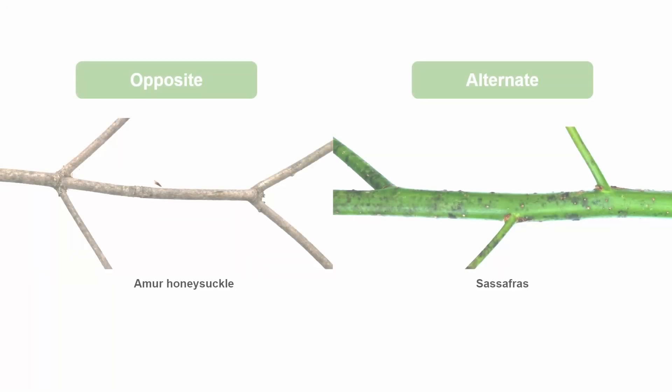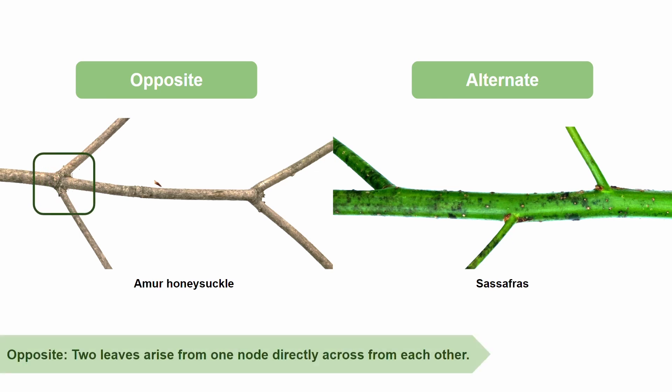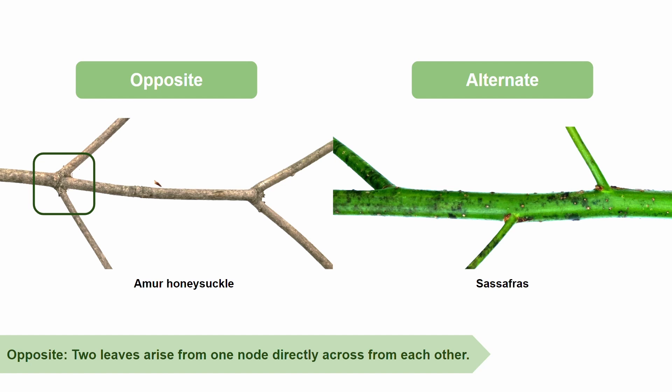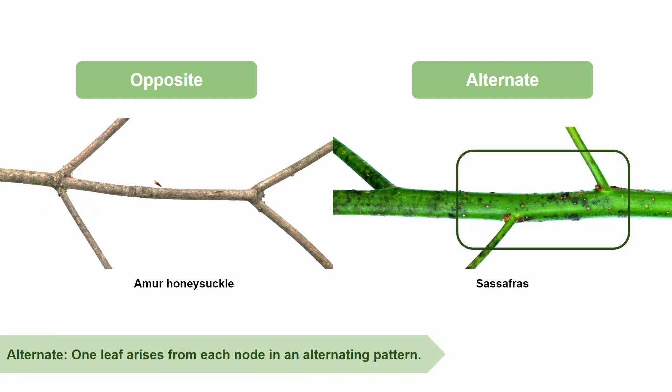Determining if a tree has opposite or alternate leaves is a very important step in species identification. Lonicera maackii, otherwise known as Amur honeysuckle, is a species that has opposite leaves. An opposite leaf pattern is seen when two leaves arise from one node directly across from each other. On the other hand, Sassafras albidum, or the sassafras tree, has an alternate leaf pattern. An alternate leaf pattern is seen when one leaf arises from each node in an alternating pattern.